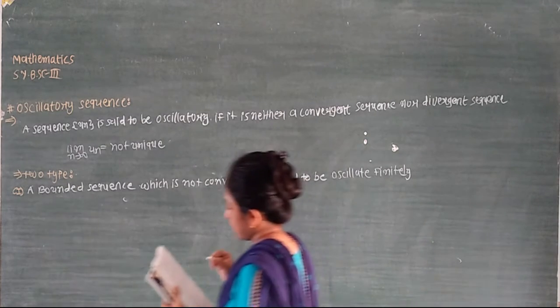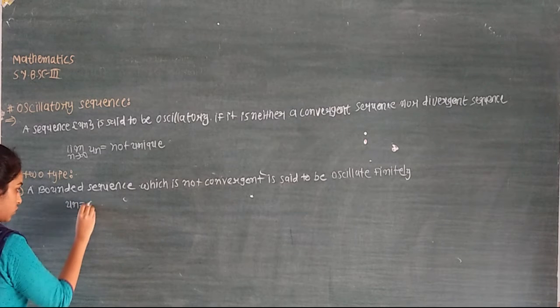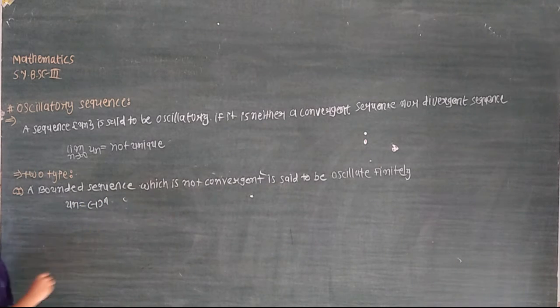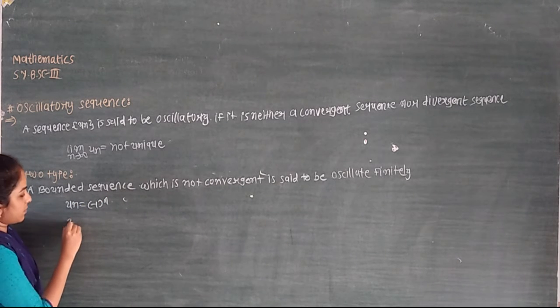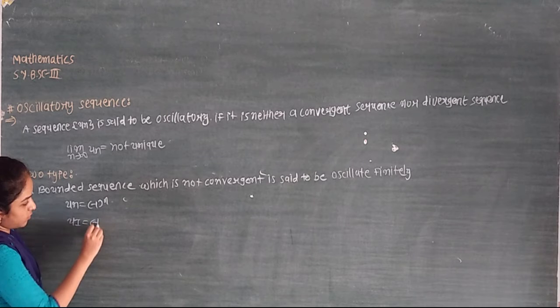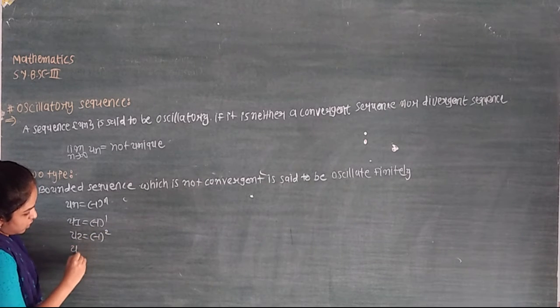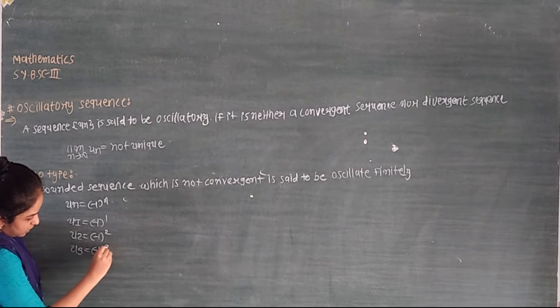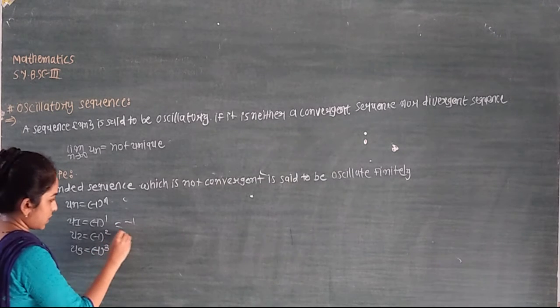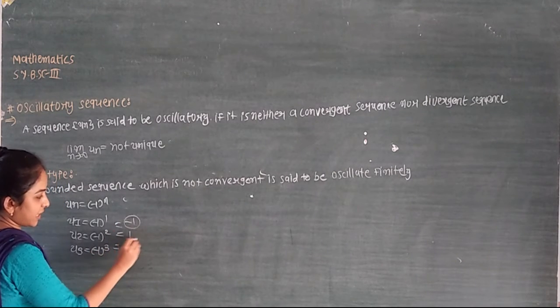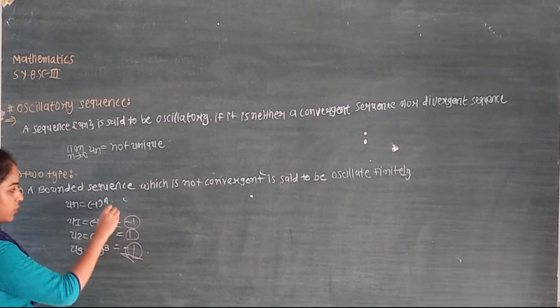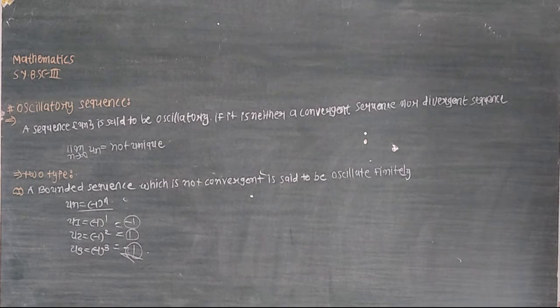For example, if u_n is equal to minus 1 raised to the power n. So u_1 equals minus 1 raised to 1, u_2 equals minus 1 raised to 2, u_3 equals minus 1 raised to 3. This is a particular sequence which is not either convergent or divergent.